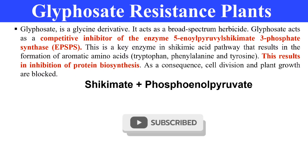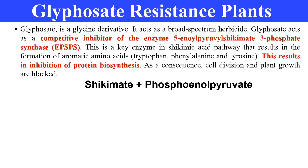If we want to use glyphosphate in our crop, we need to understand how to make our crop or plant resistant against it. For this, we have to understand the mechanism of action of glyphosphate — how it kills weeds. Glyphosphate is a competitive inhibitor of a very important enzyme: 5-enolpyruvyl shikimate-3-phosphate synthase, that is EPSPS.